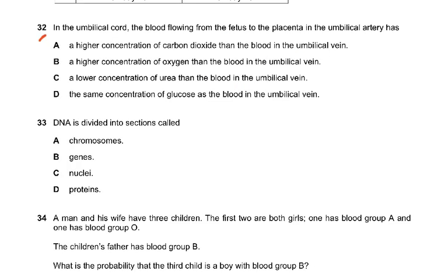Question 32. In the umbilical cord, the blood flowing from the fetus to the placenta in the umbilical artery — this is like the pulmonary artery and pulmonary vein. It carries deoxygenated blood, so there is a higher concentration of carbon dioxide in the blood in the umbilical artery. The answer is A. The vessels of the umbilical cord are like the pulmonary artery, which carries deoxygenated blood — the reverse of normal arteries.